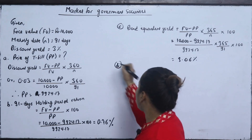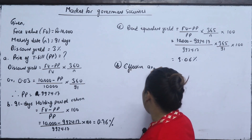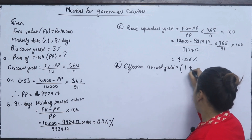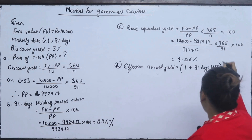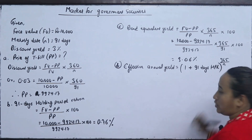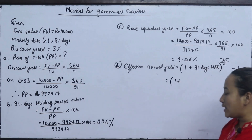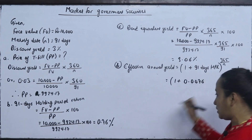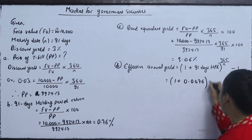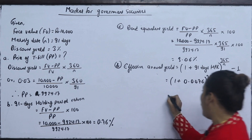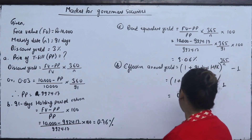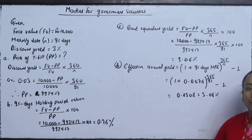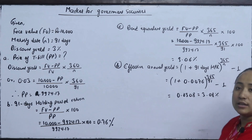The last part asks for the effective annual yield (EAR) of the bill. The formula is: (1 + 91-day HPR)^(365/91) − 1. With 91-day HPR of 0.76% (0.0076), the effective annual yield is 3.08%. This accounts for the compounding effect.